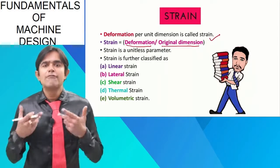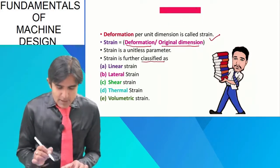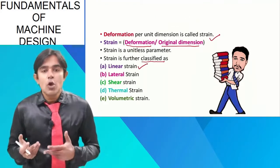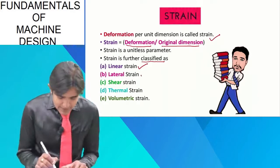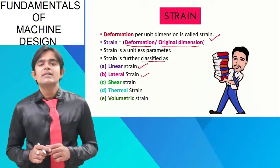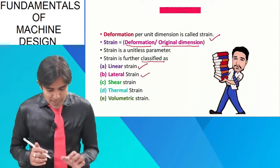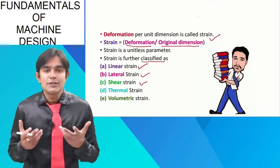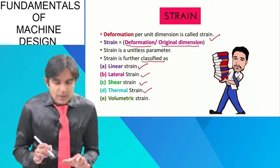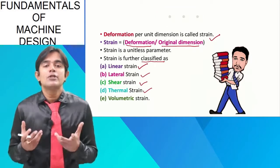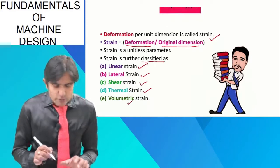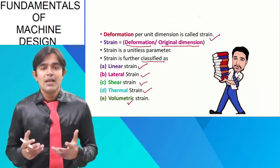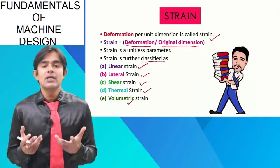Let us first classify the different types of strains. There is linear strain, also called longitudinal strain. There is lateral strain, which is exactly opposite to longitudinal strain. There is shear strain, experienced because of shear stress. There is thermal strain, experienced because of temperature, and there is volumetric strain, which involves a change in volume. Let us discuss each type one by one.